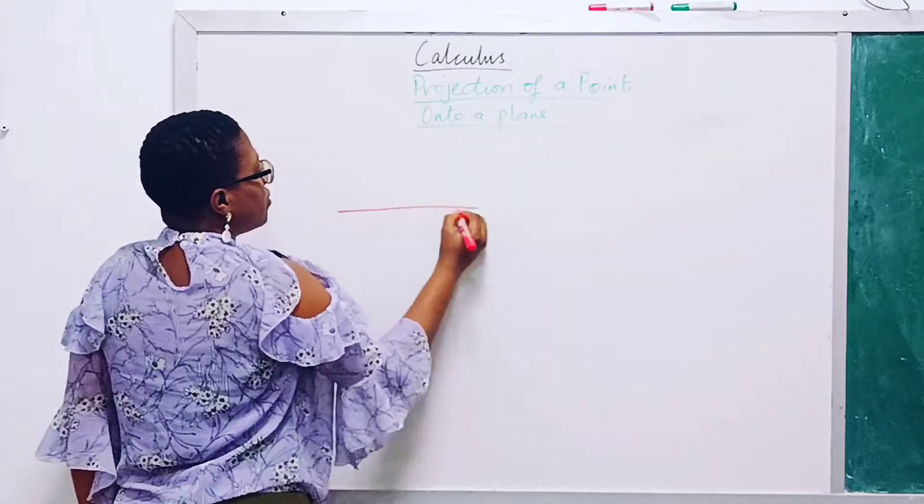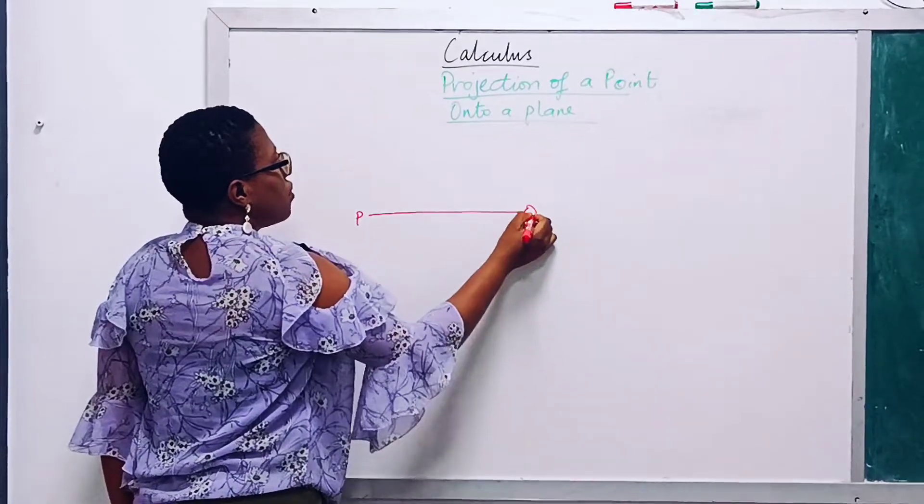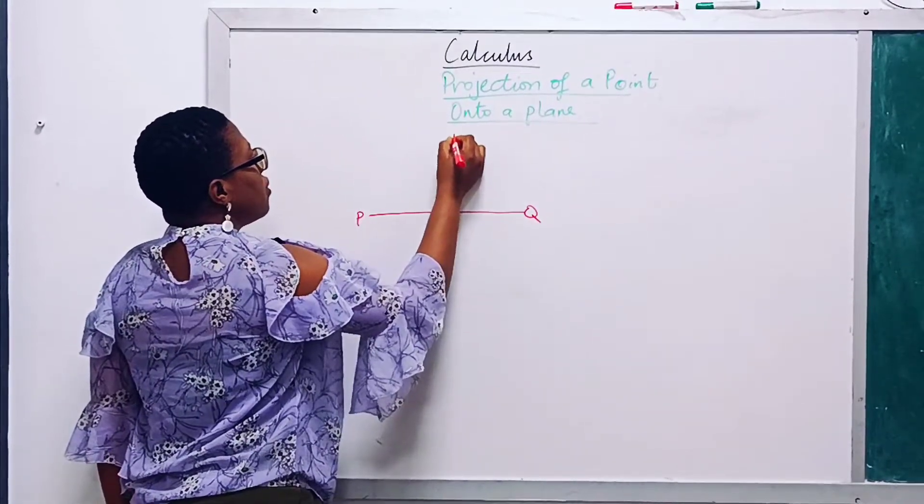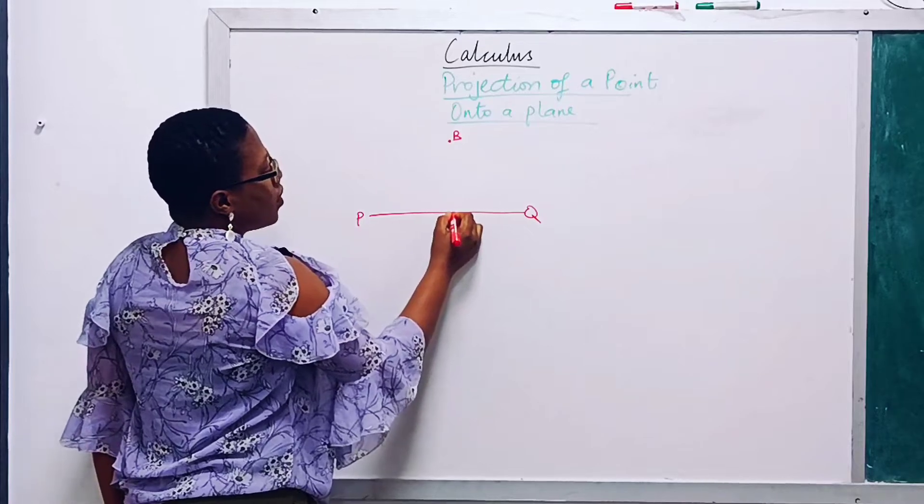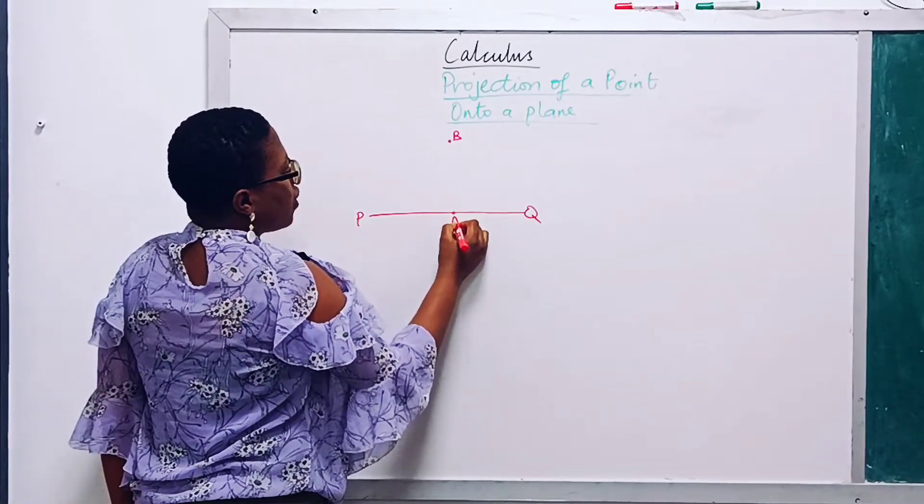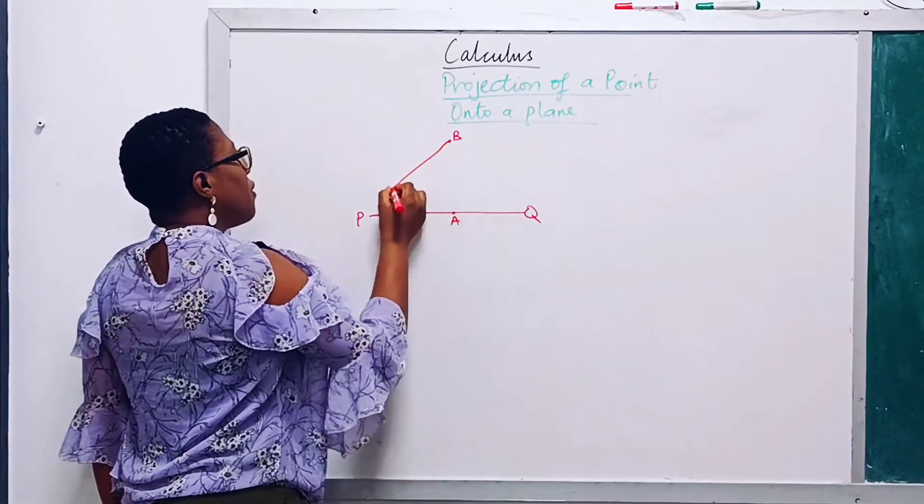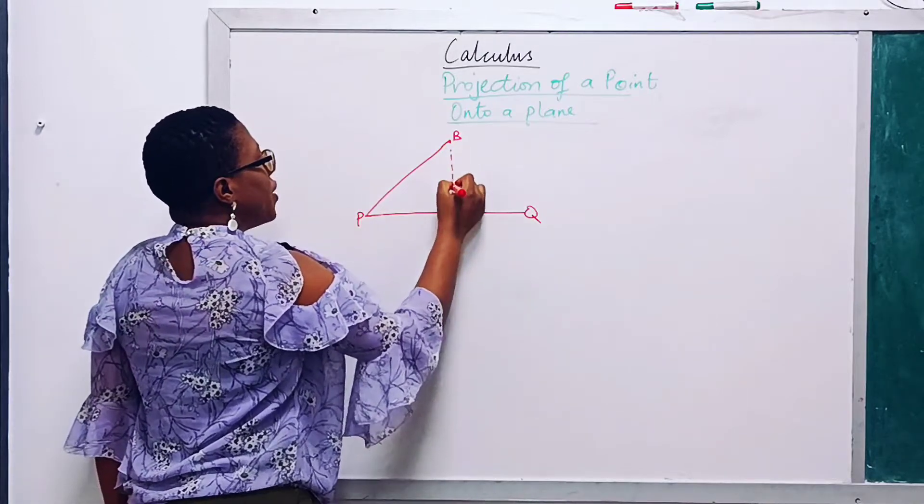If you have a plane PQ, then the projection of a point B onto this part of the plane A is given by...